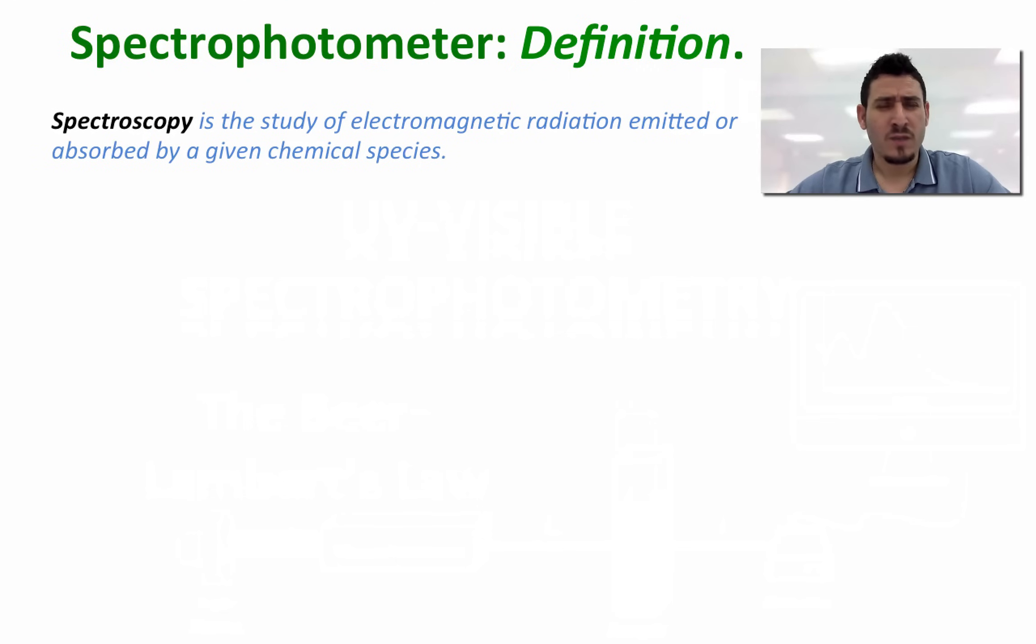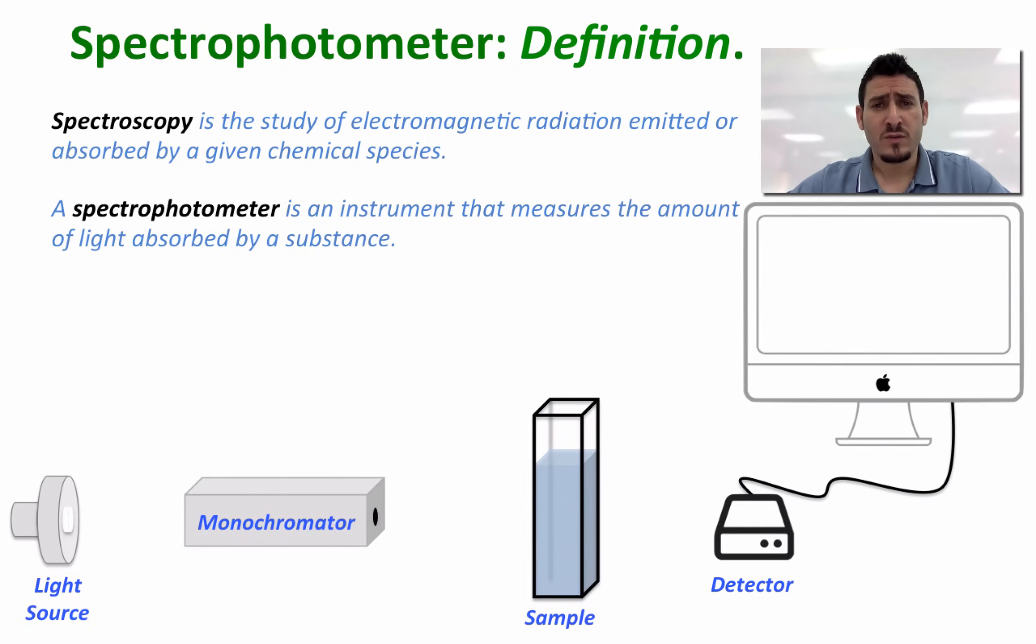Let's start by defining spectroscopy, which is the study of electromagnetic radiation emitted or absorbed by a chemical species. The instrument that uses spectroscopy is called a spectrophotometer. The spectrophotometer is an instrument that measures the amount of light absorbed by a substance.